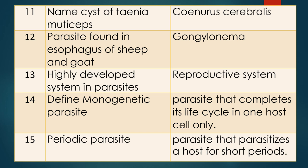Question eleven: Name the cyst of Taenia multiceps. Very commonly asked. The answer is Coenurus cerebralis. Generally the cyst is observed in the brain and causes pressure on the nervous system, causing necrosis of brain tissue. The symptoms are called Gid — Gid in sheep.